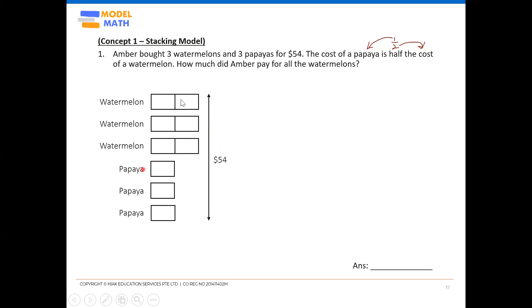Now, you notice that the moment you draw your stacking model out, it's very straightforward. You just need to work with the idea of your units. How many units is represented by your $54? So you just need to count. One, two, three, four, five, six, seven, eight, nine. So there are nine units in total.